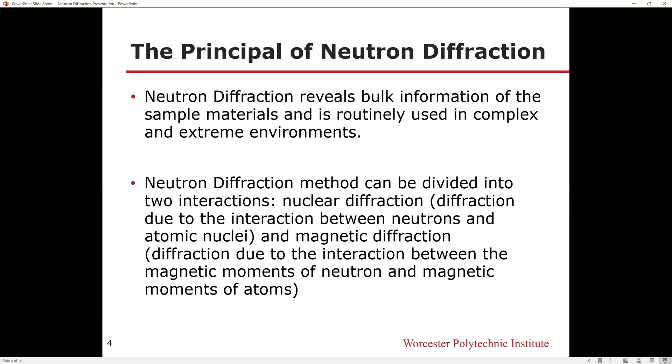Neutron diffraction reveals bulk information of the sample materials and is routinely used in complex and extreme environments. The method can be divided into two interactions: nuclear diffraction, due to the interaction between neutrons and atomic nuclei, and magnetic diffraction, due to the interaction between the magnetic momentum of neutrons and the magnetic momentum of atoms.